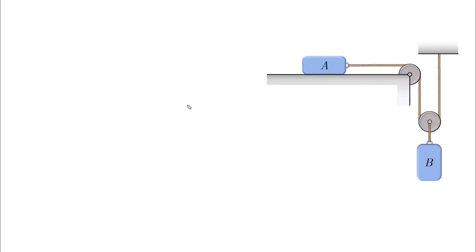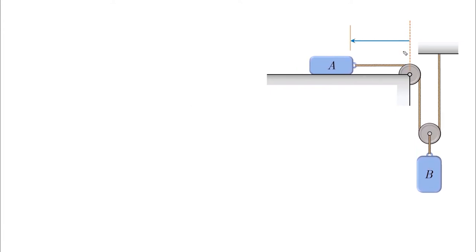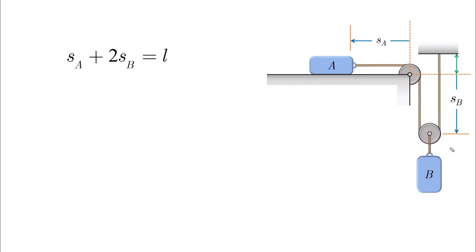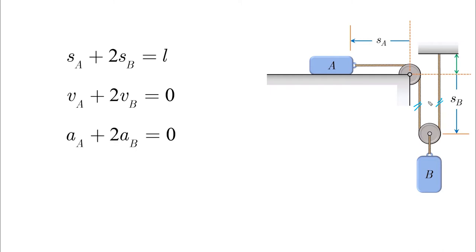Here is an example we'll see frequently. We start with a datum sA and another datum sB, following the rules: datum starts from a fixed point and the arrow points to the moving object. Adding the coordinates gives sA plus 2sB plus a constant segment equal to L. Taking the derivative once and twice gives the velocity and acceleration relationships.